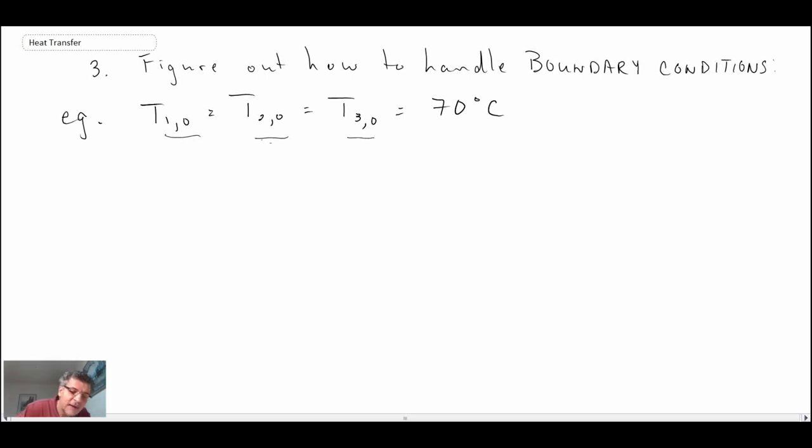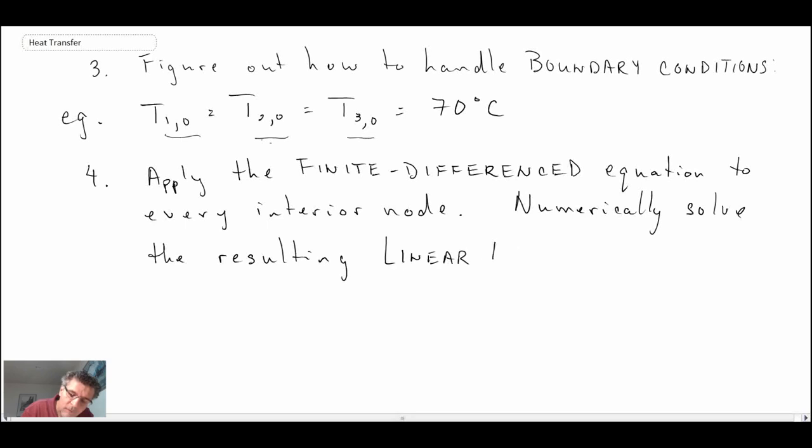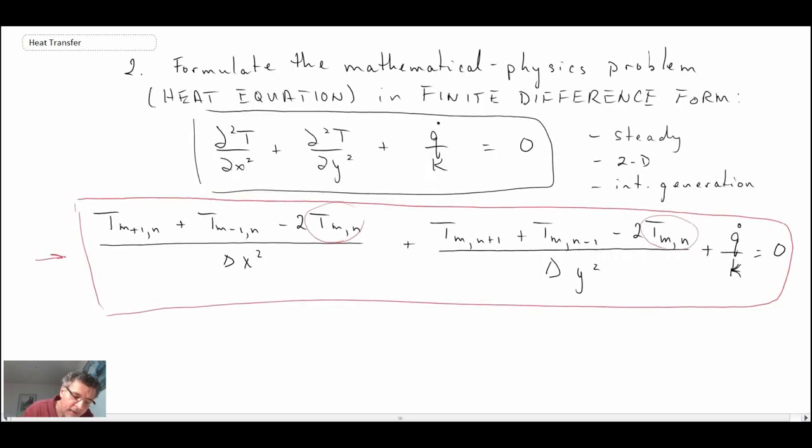The last thing that we do in this process is we need a way to be able to solve for the temperature distribution. What you do is you apply the finite difference equation, the one that we came up with here. This is the finite difference form of our mathematical physics equation.